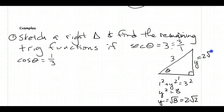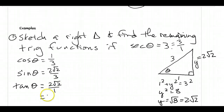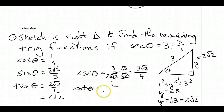Now that I have all three sides of the triangle, I can find the other four trig functions. Sine of theta is opposite over hypotenuse = 2 root 2 over 3. Tangent of theta is opposite over adjacent = 2 root 2 over 1, which is just 2 root 2. Cosecant of theta is 3 over 2 root 2; simplifying by multiplying by root 2 over root 2 gives 3 root 2 over 4. Cotangent of theta is the reciprocal of tangent = 1 over 2 root 2, which simplifies to root 2 over 4.